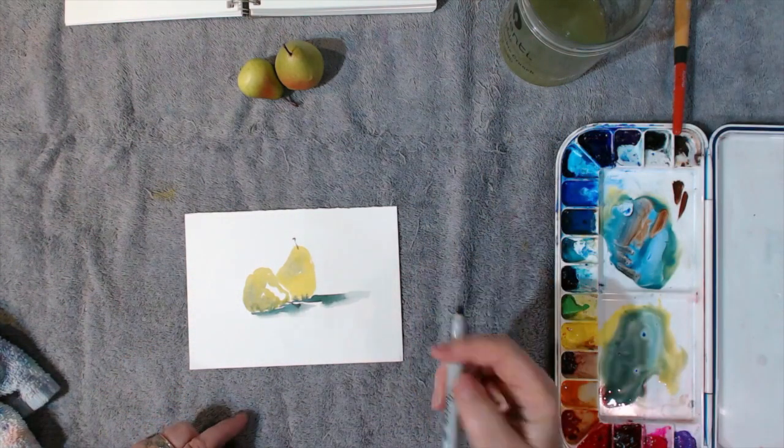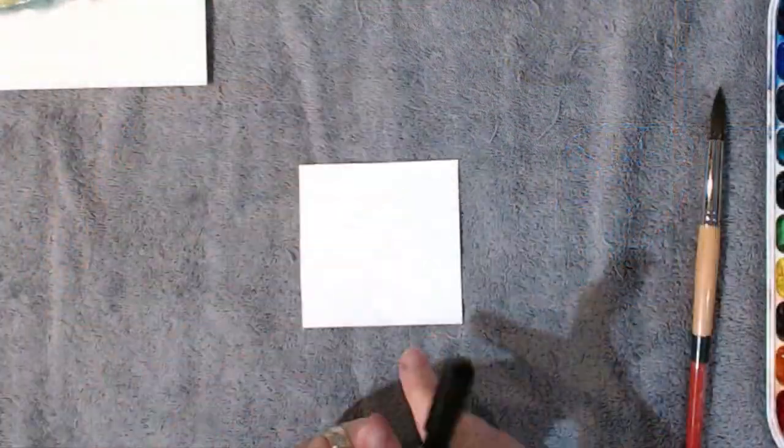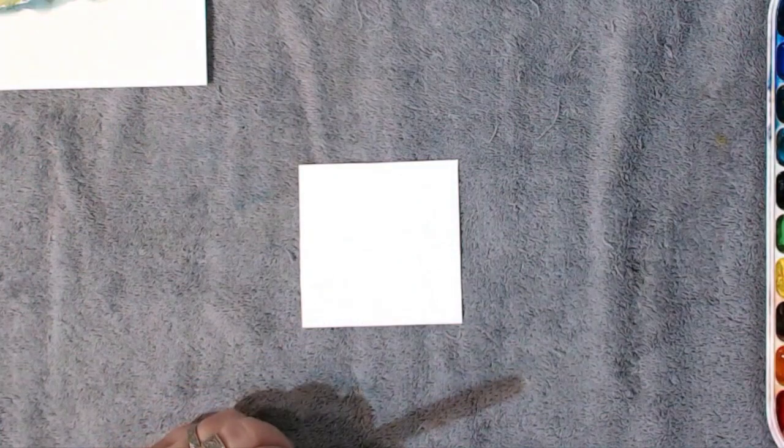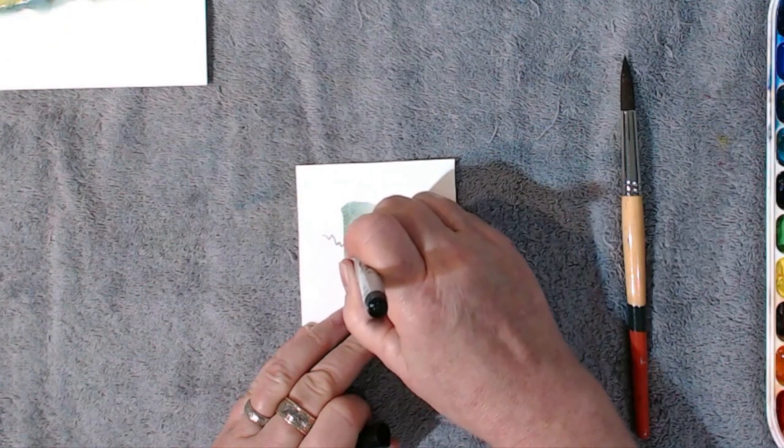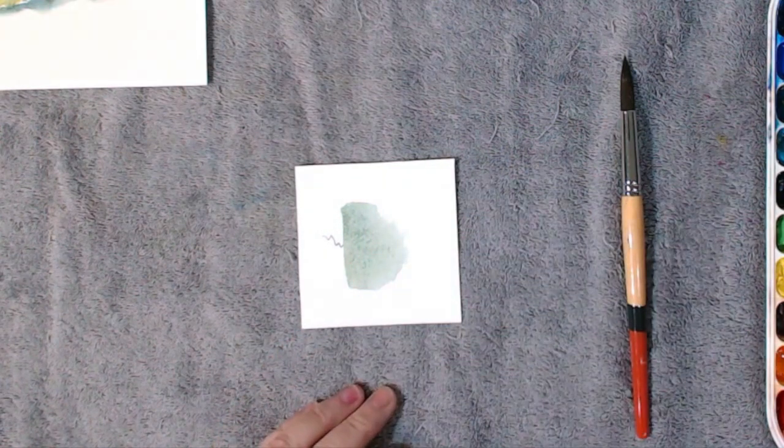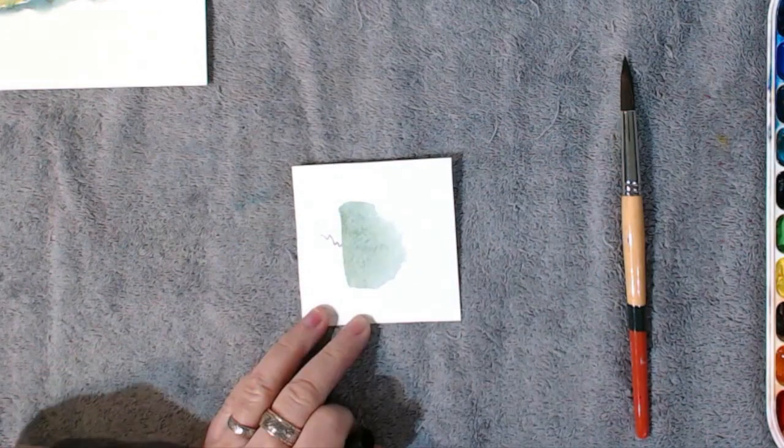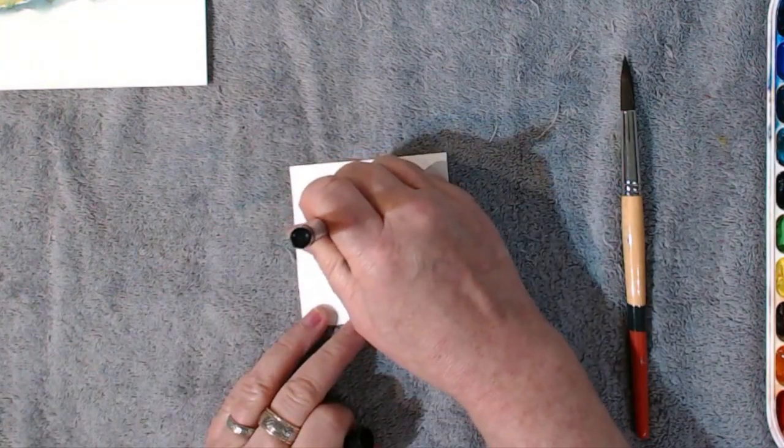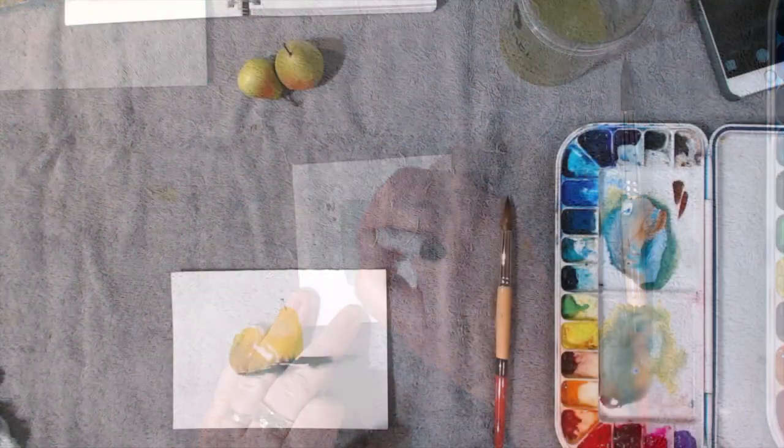You could leave it just like this or if we like we can add some line. However, you will want to wait until the paper is dry because if it's wet, you'll see the Sharpie works okay until we get to the wet area and then it doesn't write so well.